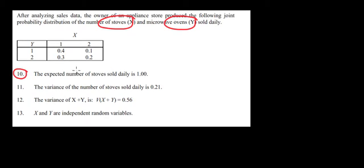The question is, what's the expected number of stoves sold daily? So the expected number of X, in other words, the expected value of X. Since we have probabilities here, we have to use the probability distribution to calculate our expected value.